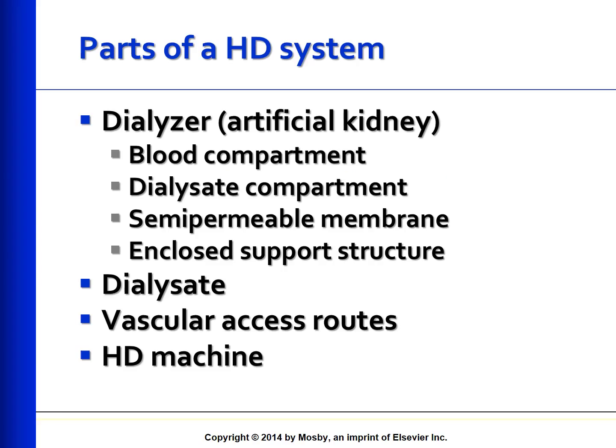Hemodialysis has four different parts. The first is the dialyzer, which is also referred to as the artificial kidney. It has the blood compartment, the dialysate compartment, the semipermeable membrane, and the enclosed support structure. The second part is the dialysate solution. The third is the vascular access routes. And fourth is the hemodialysis machine.